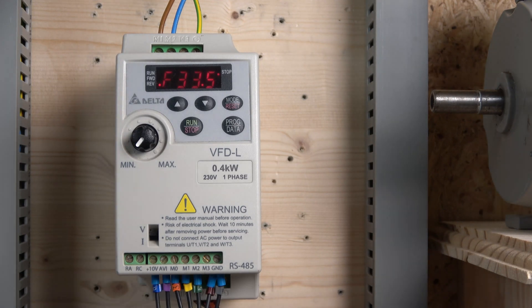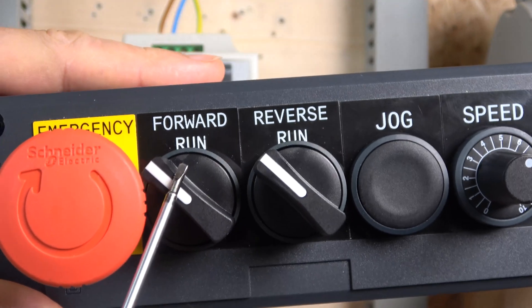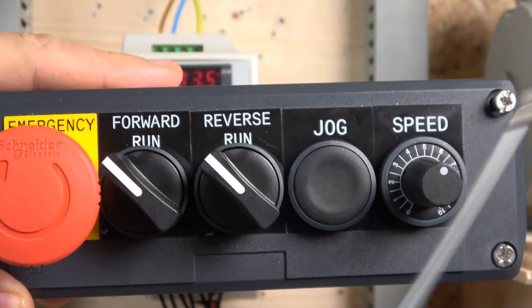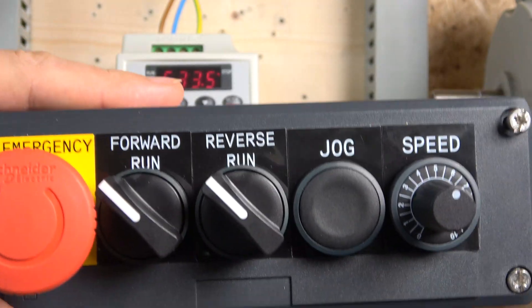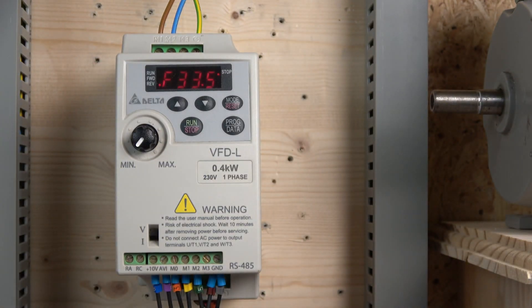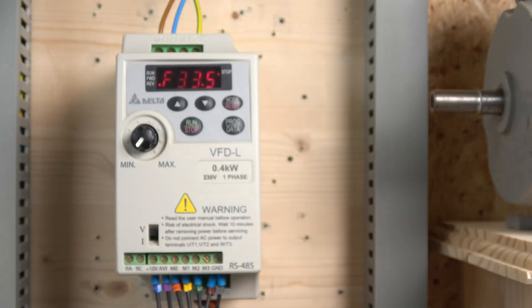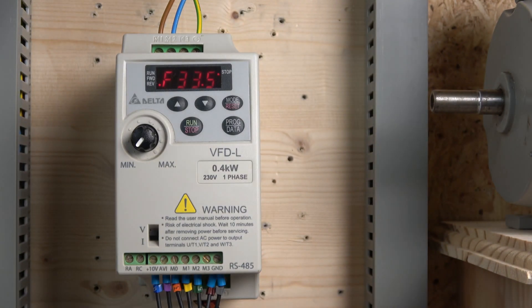Our first station is going to look like this. We will have a run forwards, a run reverse, we're going to have a jog, and also we have a potentiometer. We will still have one more input left over, so we'll add an e-stop. The e-stop will remove the source for activating the IOs.